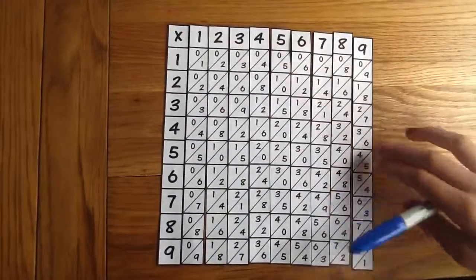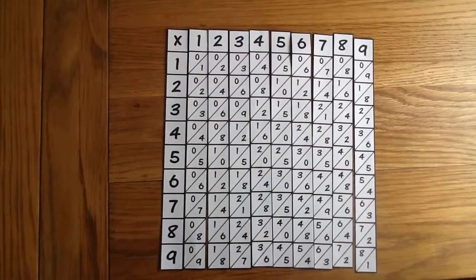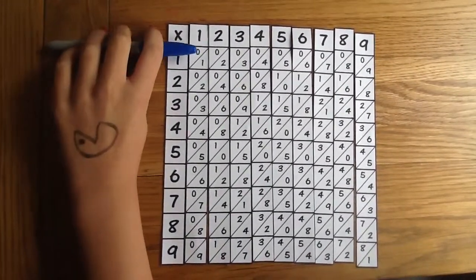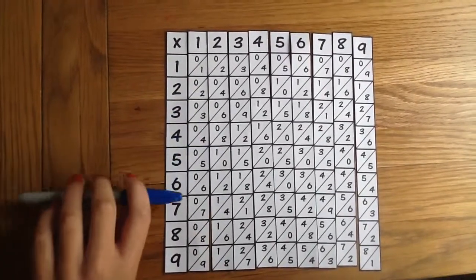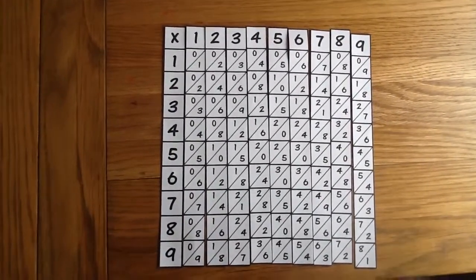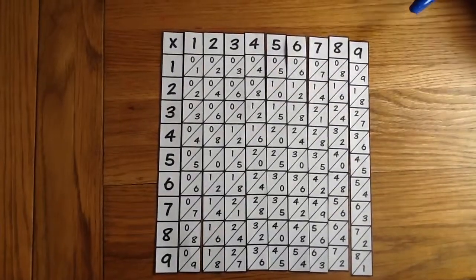As you can see also these are your times tables. So if you look down the 1 column, 1 times 1 is 1, 1 times 2 is 2, 1 times 3 is 3 and so on: 4, 5, 6, 7, 8 and 9. And that also goes along the row at the top.